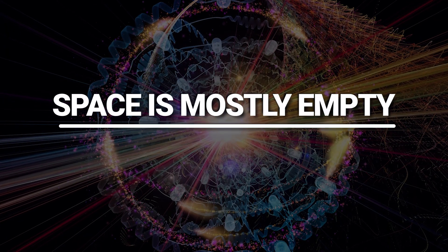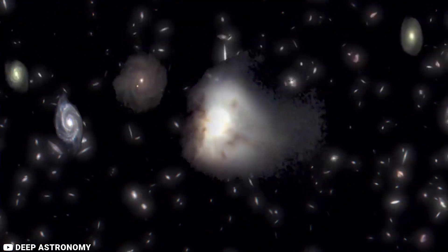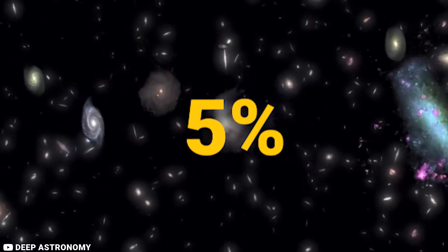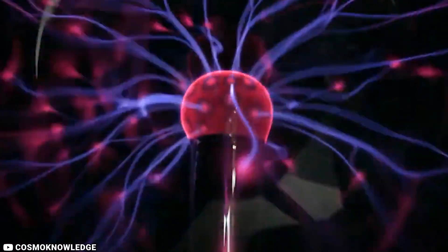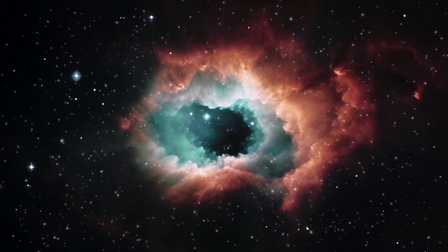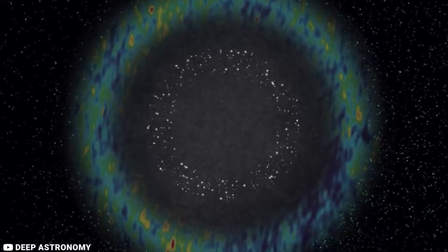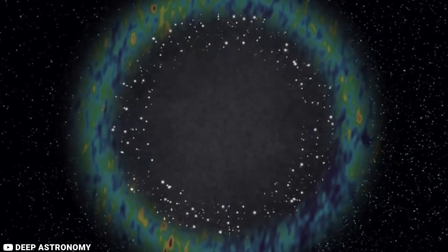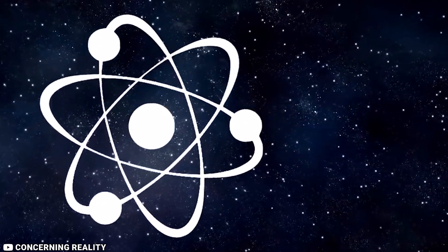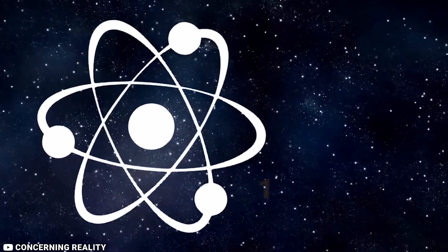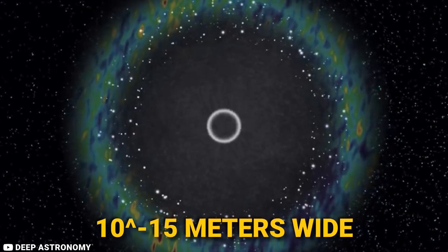Space is mostly empty. With matter making up only about 5% of the universe, the rest is made up of dark energy and dark matter. The space between galaxies is mostly empty. In fact, the average density of the universe is about 5 protons per cubic meter. That's very empty, especially when you consider that a single proton is about 10 to the 15 meters wide.